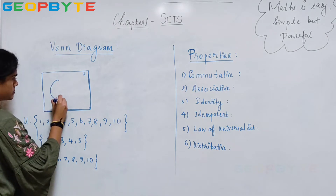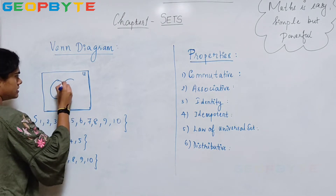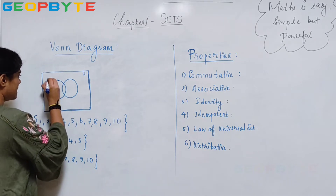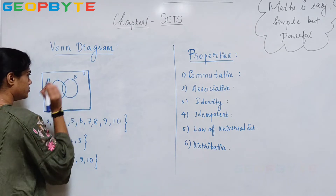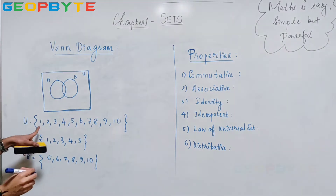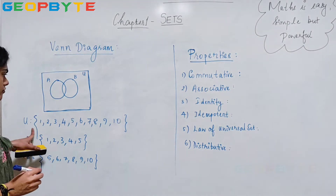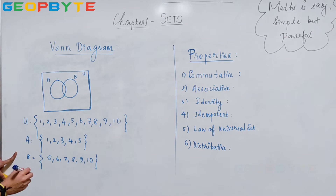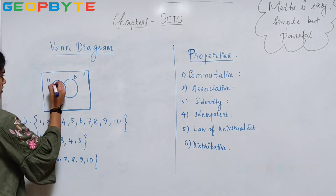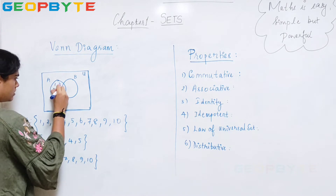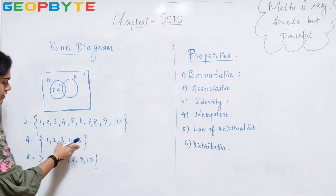They are represented in circles. This is my A and this is my B. So what are the elements in the universal set? It contains 1 through 10. So what are the elements in set A? 1, 2, 3, 4 and 5.